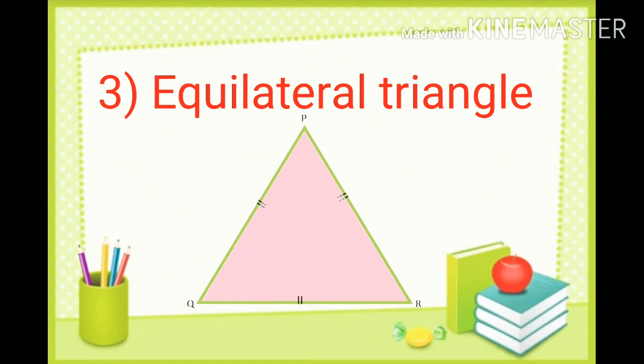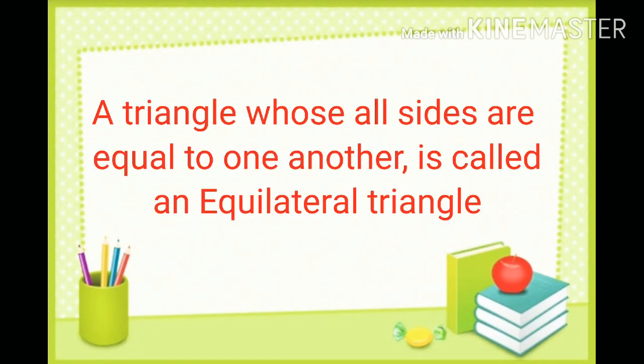Now the third type is equilateral triangle, which means a triangle whose all sides are equal to one another is called an equilateral triangle.